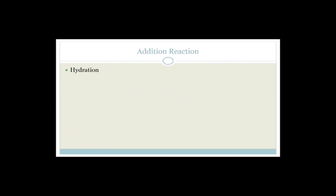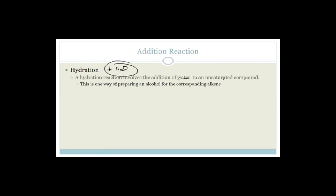The next addition reaction is hydration — as the name implies, it involves adding water. Think 'dehydrate' or 'rehydrate.' Hydration adds H2O to an unsaturated compound and is one way of preparing an alcohol from the corresponding alkene.